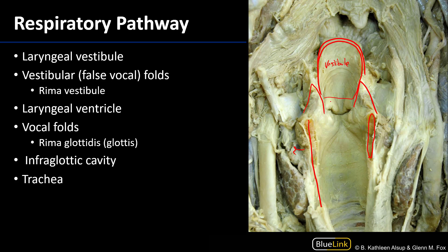Just below that space there are folds. These folds are covering over ligaments that run between the arytenoid cartilages and the thyroid cartilage anteriorly. These are called the vestibular folds, sometimes called the false vocal folds. They have a protective function for the vocal folds. The space between them is known as the rima vestibuli.